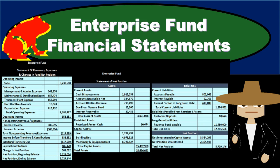In this presentation, we will put together financial statements related to an enterprise fund, recalling that there are three categories of funds: governmental funds, proprietary funds, and fiduciary funds. The governmental funds are the largest category, operating on a modified accrual basis as opposed to a normal accrual basis.